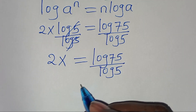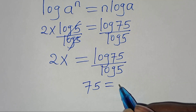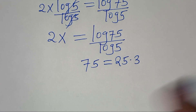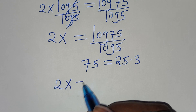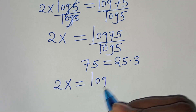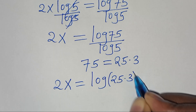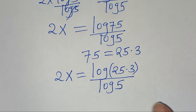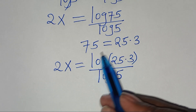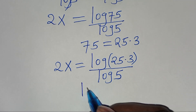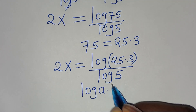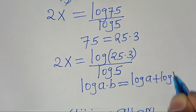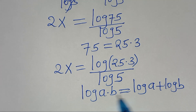We can express 75 as 25 multiplied by 3. Substituting this, we have 2x equal to log(25 × 3) divided by log 5. Now, log(25 × 3) is in the form of log(a·b), which we can express as log a plus log b, applying the logarithm product property.